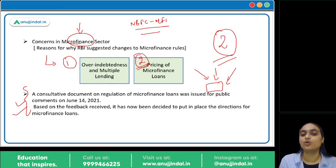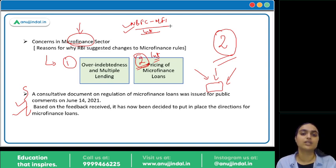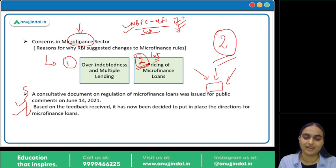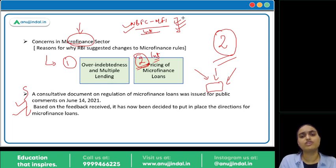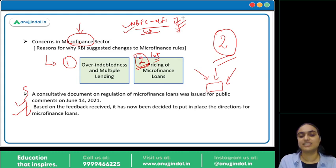The second concern is regarding the pricing of microfinance loans. Interest rate regulations existed only for NBFC-MFIs, not for commercial banks or other institutional channels. But those entities were following similar loan pricing as NBFC-MFIs, even though they could have lent at lower rates given their economies of scale and lower costs. This lack of competitive pricing was not benefiting borrowers, so new pricing norms were needed.